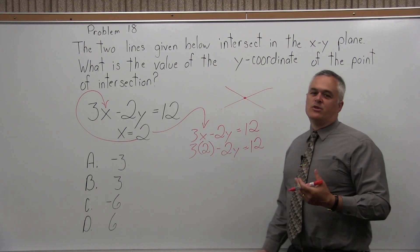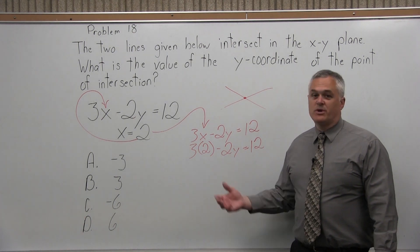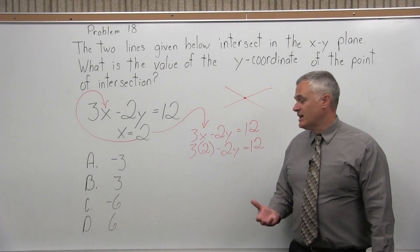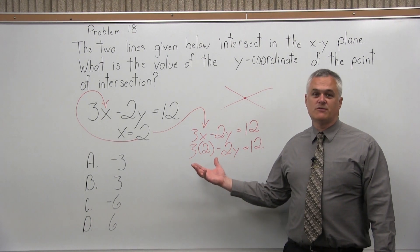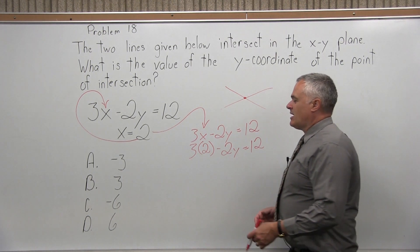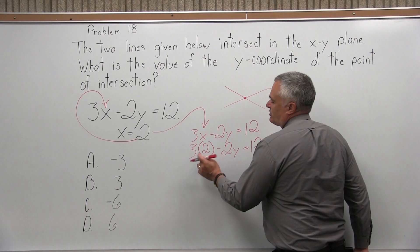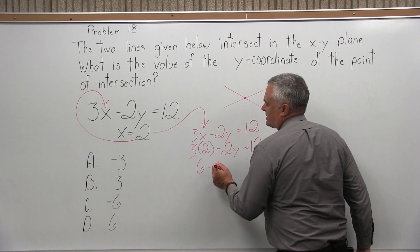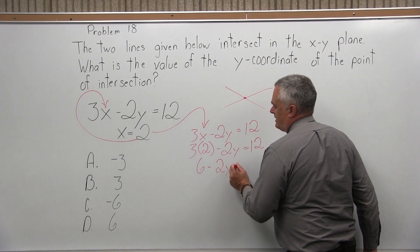Now do the math. The real important thing, once you get to this point, is pay attention to the signs and be careful. By far, the most common source of error for a problem like this is just losing a negative. So take your time, pay attention. 3 times 2 is 6. So I have 6 minus 2y equals 12.